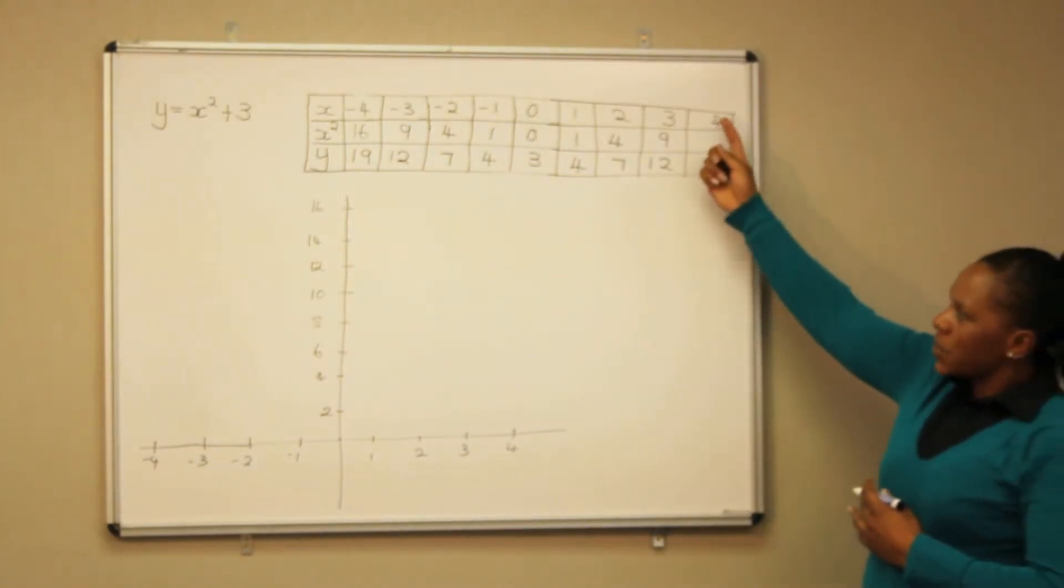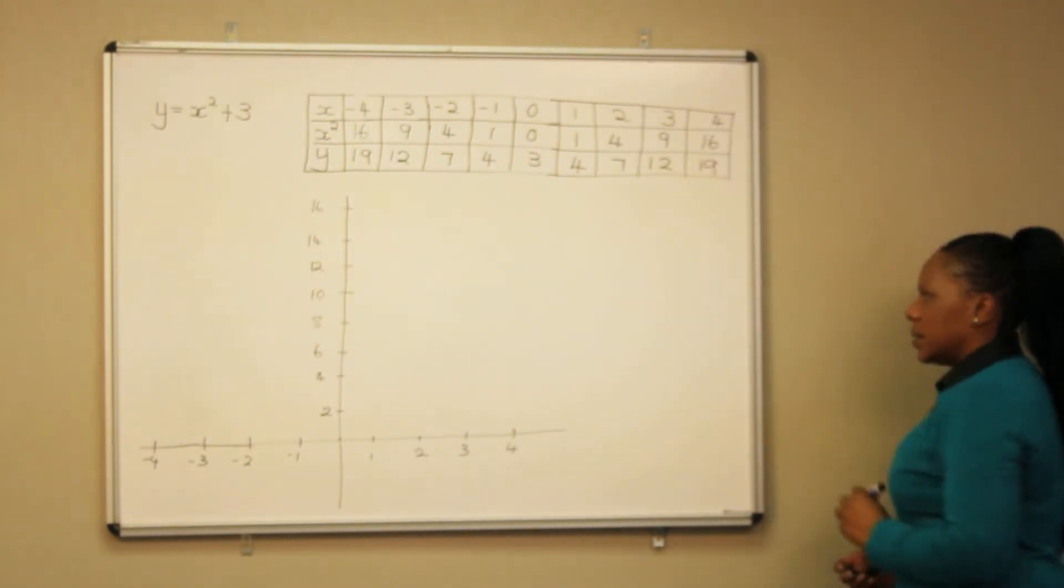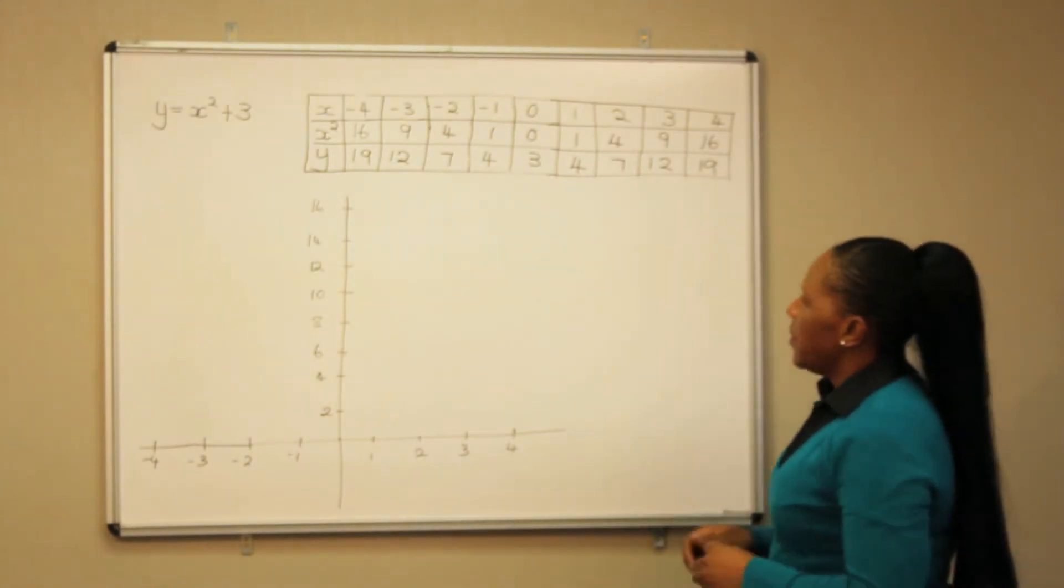4 squared gives us 16, plus 3 we get 19. So having these values we are now going to plot our graph.